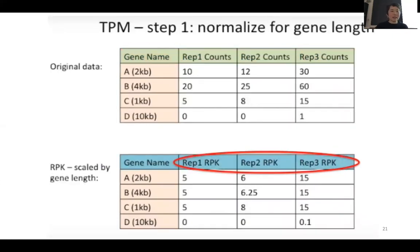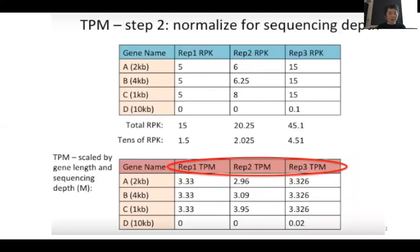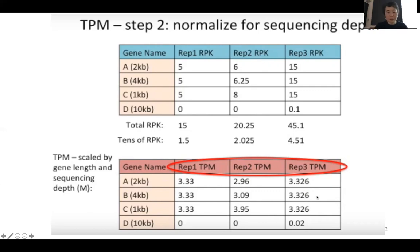TPM uses a different normalization on the same original data. The first thing you do is normalize by gene length — so 10 divided by 2, 20 divided by 4, 5 divided by 1. You can already see that these three genes are expressed at the same level. After gene normalization, you sum up these gene-normalized reads and divide by 10 — normally you'd divide by a million. The scaling factor is now 1.5, 2.025, and 4.51, which you divide from this value. So 5 divided by 1.5 gives 3.33, 6 divided by 2.25 gives these numbers.